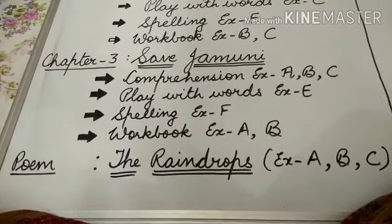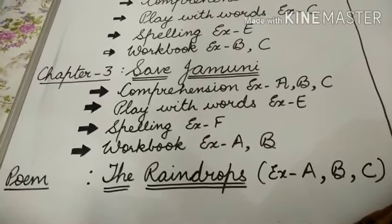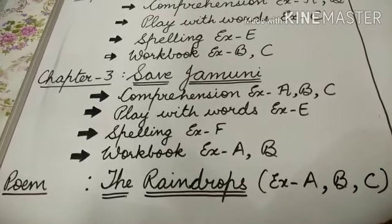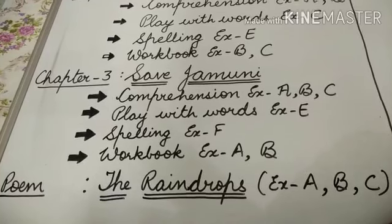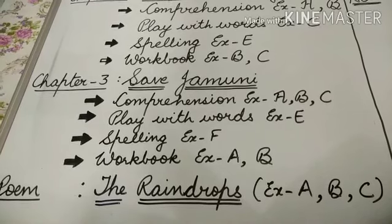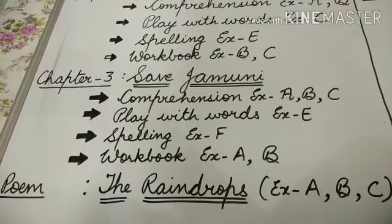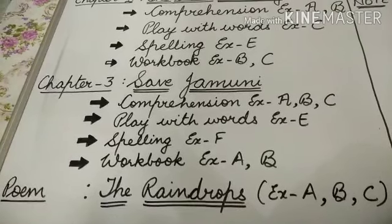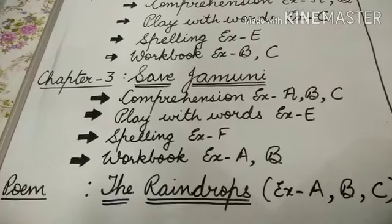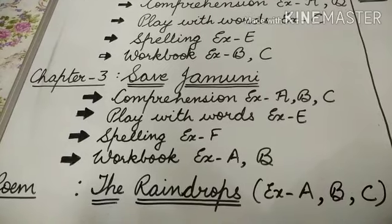Then next is the poem, The Rain Drops. Exercise A, B and C from the English reader book are included in this first term syllabus. Workbook exercises of this poem are not included in the syllabus. Only from the reader book, Exercise A, B and C are there in the syllabus.